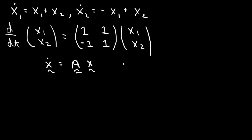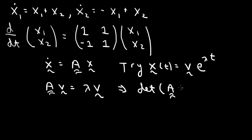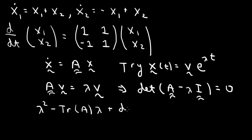To solve this system, we try a form of the solution where x(t) equals some constant vector times e to the lambda t. We substitute in and get our eigenvalue problem: A times v equals lambda v. The characteristic equation is the determinant of (A minus lambda I) equals 0. For a 2×2 case, that becomes lambda squared minus the trace of A times lambda plus the determinant of A equals 0.